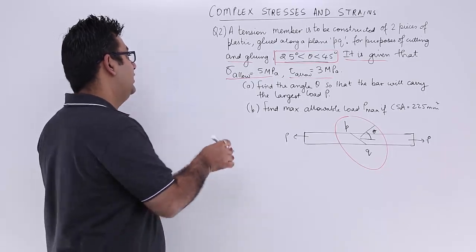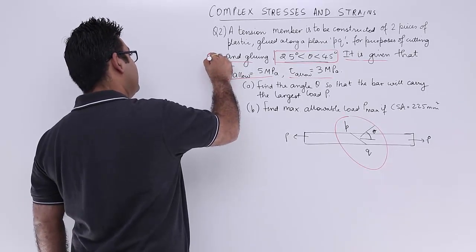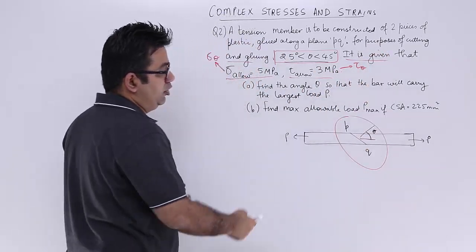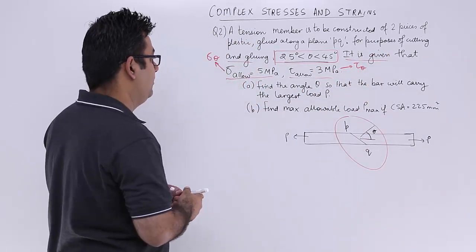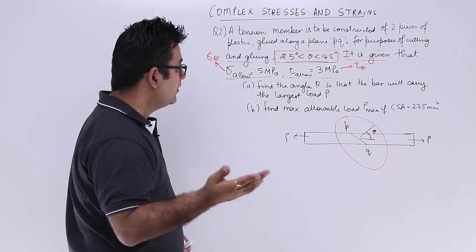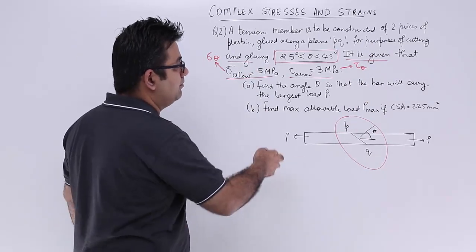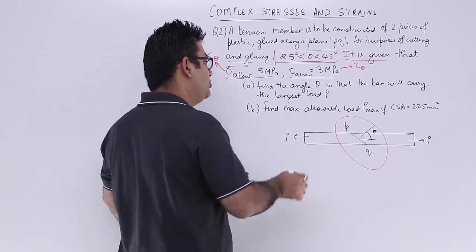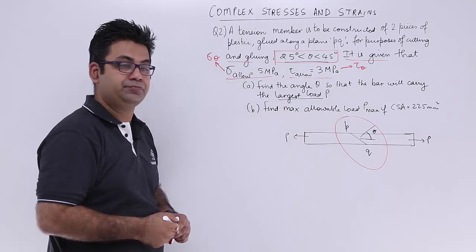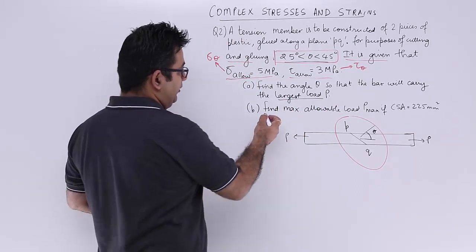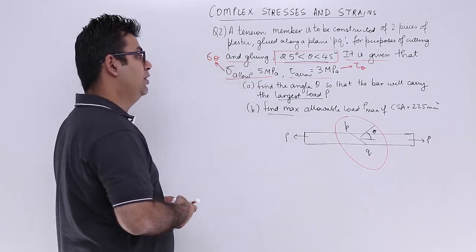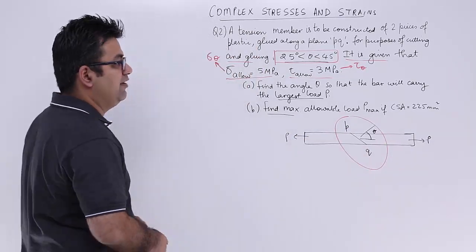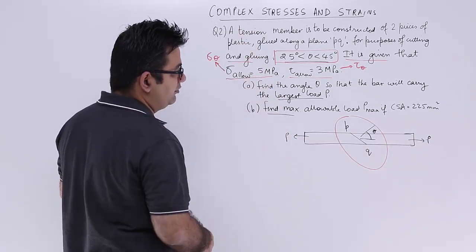It is given that the allowable tensile stress and allowable shear stress is 5 MPa and 3 MPa respectively. So this is sigma theta and tau theta along that theta. We need to find the angle theta so that the bar will carry the largest load. We have to find theta corresponding to maximum load, and also find the maximum load if the cross section area is 225 mm square.